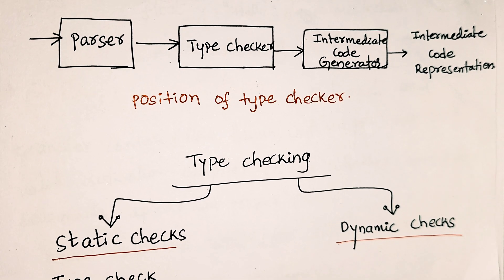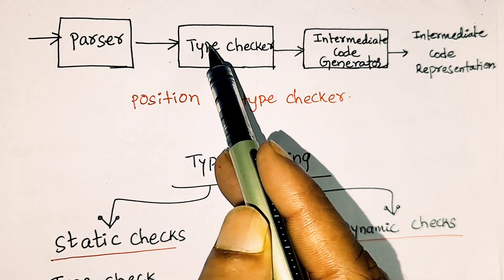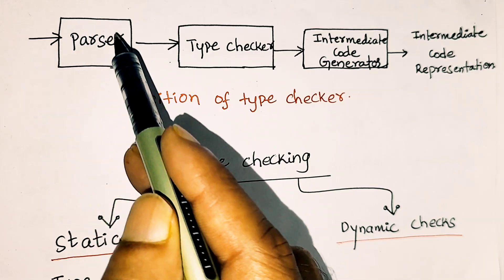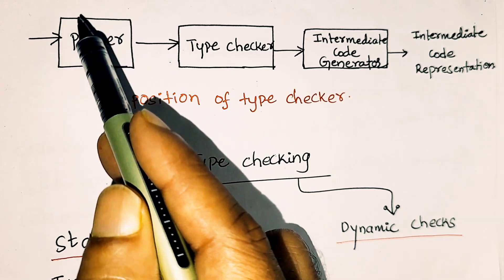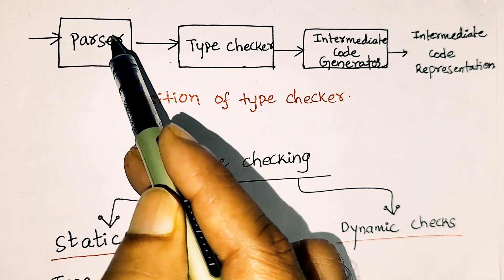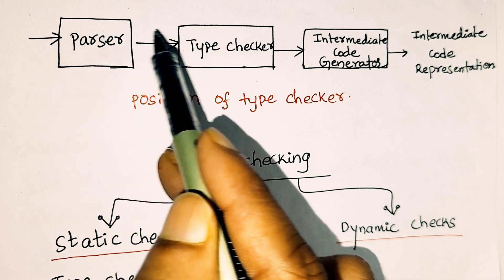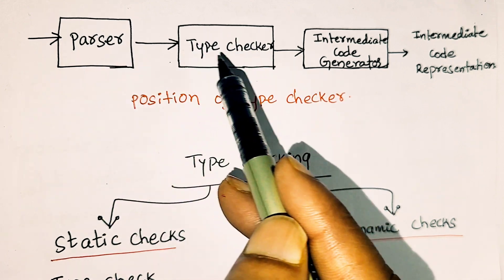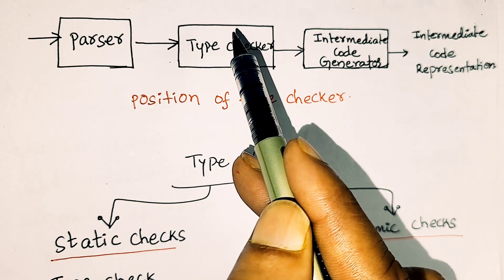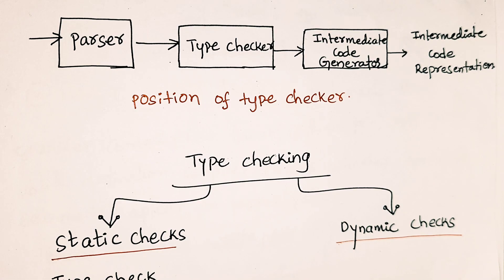Here is the diagram showing the position of the type checker in the compiler pipeline. The flow goes: Parser → Type Checker → Intermediate Code Generator. The parser is generated by syntax analysis. After the parser, data is sent to the type checker, which checks the types of the data, and then sends it to the intermediate code generator.